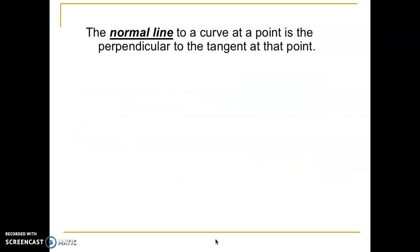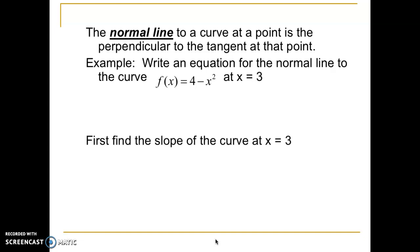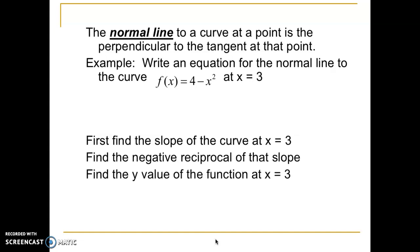A couple more definitions to go through. The normal line to a curve is the line perpendicular to the tangent line at that point. For example, if asked to write the equation for the normal line to the curve F of X equals 4 minus X squared at X equals 3, what we would do is find the equation of the tangent line of the curve and then simply change its slope to its negative reciprocal — the line that's perpendicular to the tangent line. So first, find the slope of the curve at X equals 3, then find the negative reciprocal of that slope, then find the value of the function at X equals 3 and write the equation of the normal line.